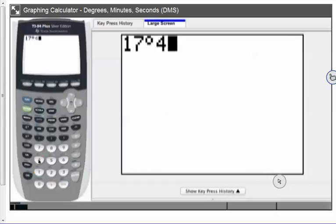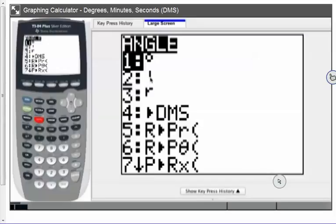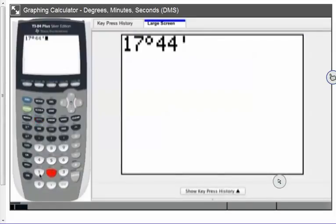Let's say it's 44 minutes, so type in 44 and I go back to the angle list. This second notation right here, the single dash, is for minutes. So I press two, and now I enter seconds. Let's say 10 seconds.